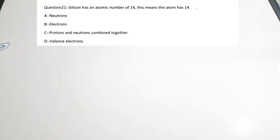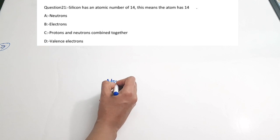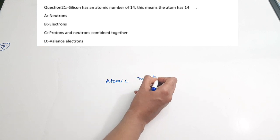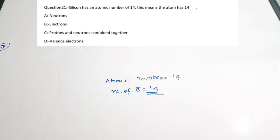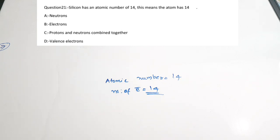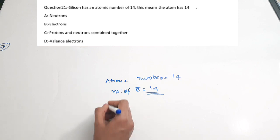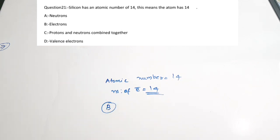The seventh question: silicon has an atomic number of 14. This means the atom has 14 — dash. Options: A) neutrons, B) electrons, C) protons and neutrons combined, D) valence electrons. The atomic number indicates the number of electrons, while the mass number indicates the number of protons and neutrons. Since the atomic number is 14, the number of electrons is 14. The correct answer is option B.